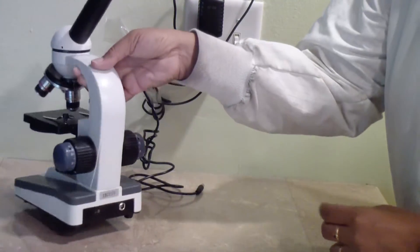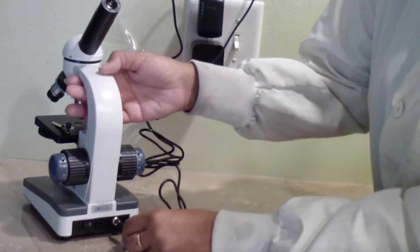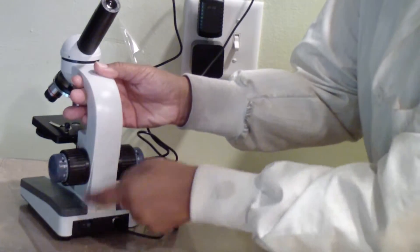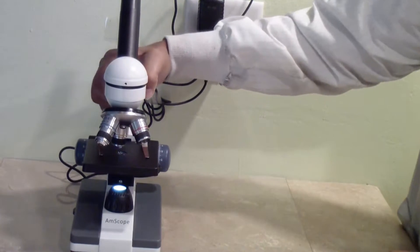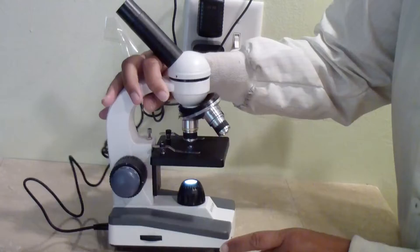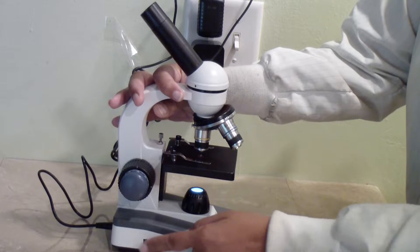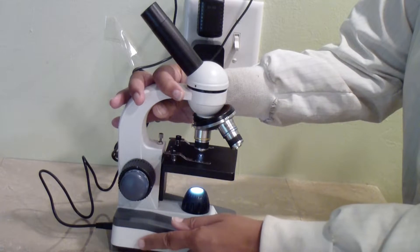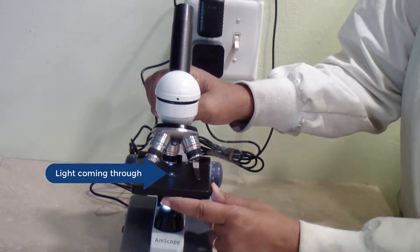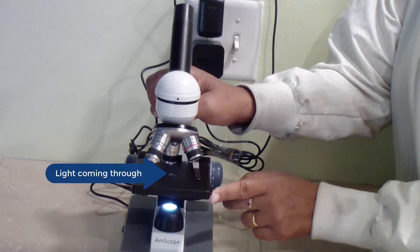The power supply plugs into the back, where you will also find the switch. When you turn the microscope on, the light should come on. If you do not see any light, try adjusting the dimmer on the side of the microscope. There is also a diaphragm to adjust the amount of light that goes through.